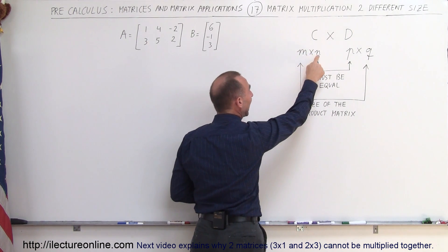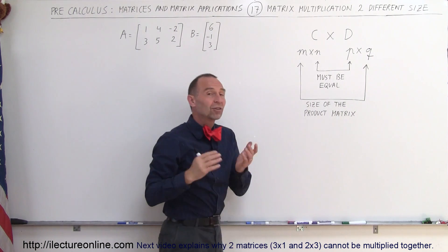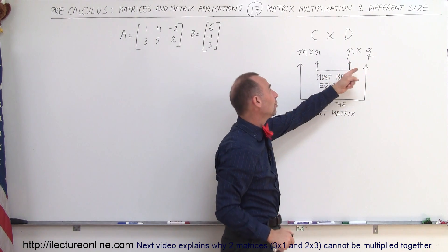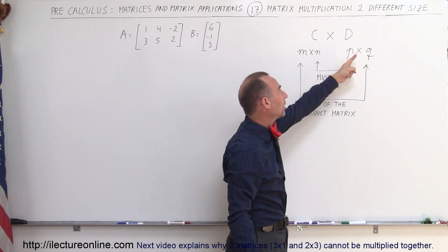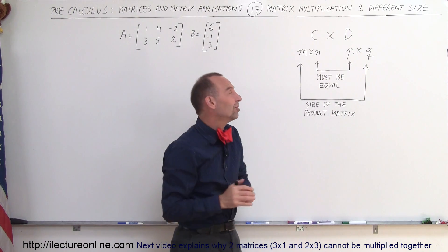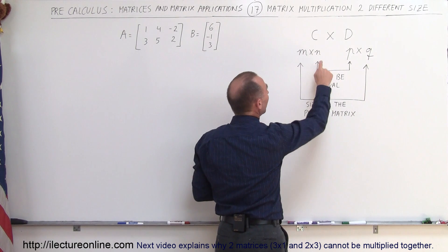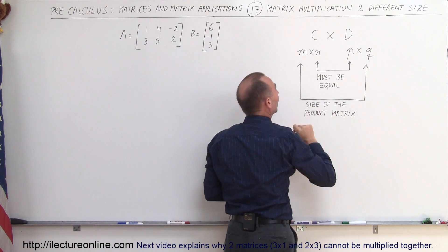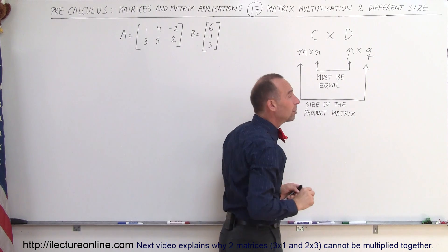Matrix C has dimensions M by N, which means M number of rows and N number of columns. And matrix D has a dimension P by Q, which means P number of rows and Q number of columns. And the only way that you can multiply two matrices together is that the number of columns of the first matrix equals the number of rows of the second matrix. Those two numbers must be equal.